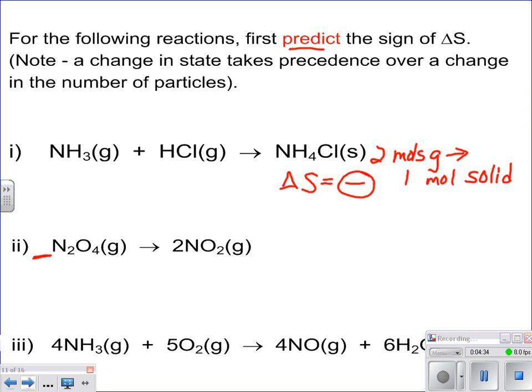But notice our number of particles. We have one particle going to two particles. So we've got more disorder. One mole gas going to two moles of gas. So it's going to be more disordered. Therefore, our delta S is going to be a positive value.